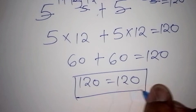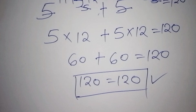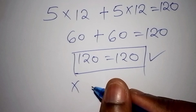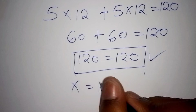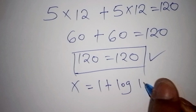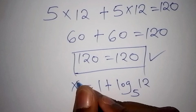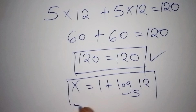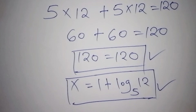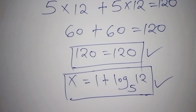So it means that we are correct. We can now conclude that the value of x equals 1 plus log of 12 to the base of 5. This is the correct answer. If you find any problem working out this math problem, follow the steps that have been highlighted. That marks the end of our maths video.